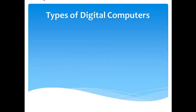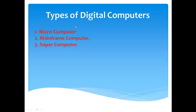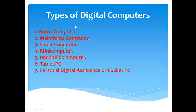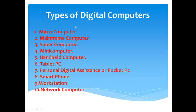Next comes the digital computer. A digital computer works on digital input. The types of digital computers are: first, micro computer; second, mainframe computer; third, super computer; fourth, mini computer; fifth, handheld computer; sixth, tablet PC; seventh, personal digital assistant or pocket PC; eighth, smartphones; ninth, workstation; and tenth, network computer. Now we will see them one by one.